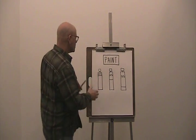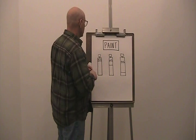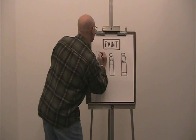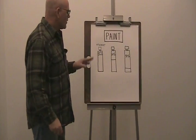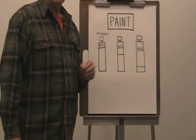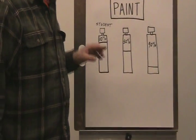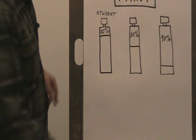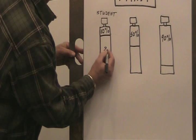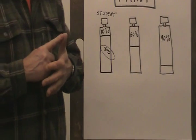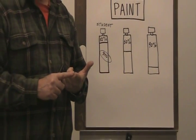We have this little drawing here representing three different grades of paint. The first one we're going to start with is, in fact, student grade. With most brands of student grade paints — and it doesn't really matter whether they're acrylics or oils — you are going to get approximately 10% pigment in the tube. The other 90% can be low quality to average quality binder.